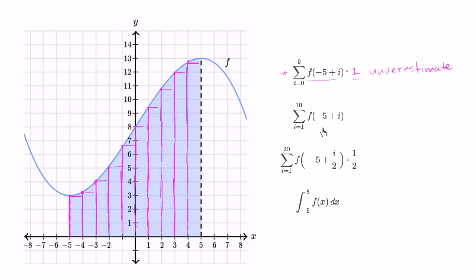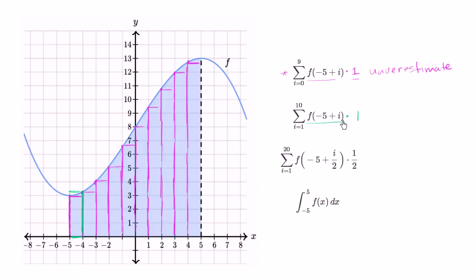Now let's think about what this second expression is. We're taking the same sum of f, but starting at i equals 1 and going to 10 — so once again, 10 things. Negative five plus one is negative four, and f of that is this line right over here. So it looks like we're taking right-handed rectangles, because we could say times one — and obviously multiplying by one doesn't change the value. So that would be the area of this first right-handed rectangle. Then when i equals two, it's going to be f of negative three.